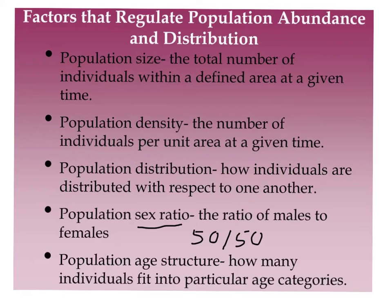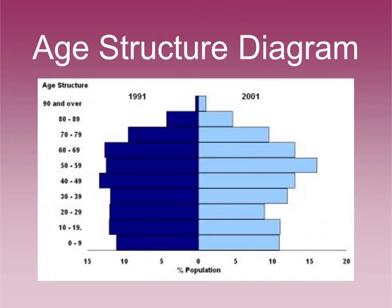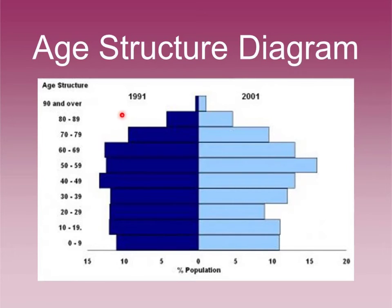The last factor we're going to look at is population age structure. An age structure diagram shows what percent of the population — males and females — make up different age groups. This will be helpful when we get to the chapter on human populations. If you have a lot of young individuals, that's a population likely to grow quickly. If most of the population is above reproductive age, it's going to be a slow-growing population.